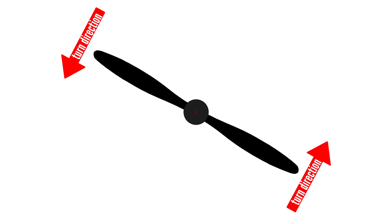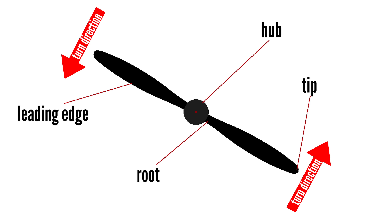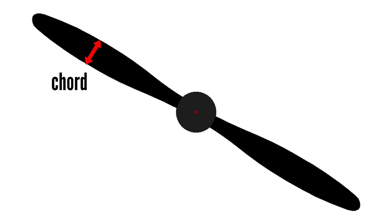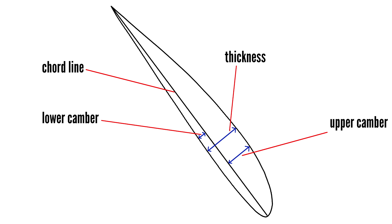A propeller consists of a hub, the propeller root, propeller tip, leading edge and trailing edge. The angle of the propeller blade is its pitch. The width of the blade is called the cord, and camber is the shape over the top and below the camber line and determines the blade's thickness.